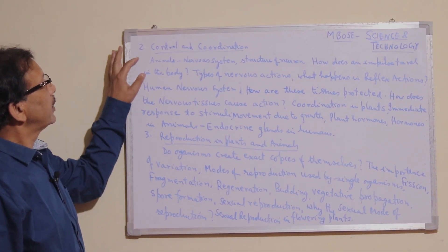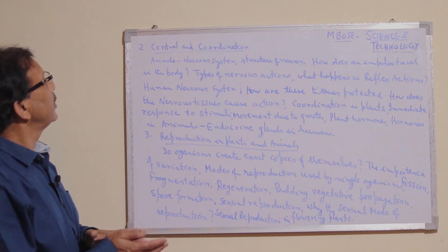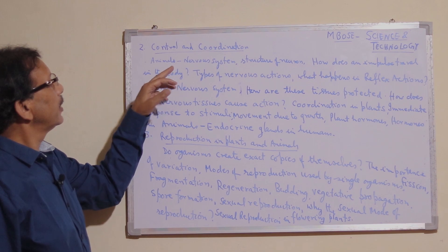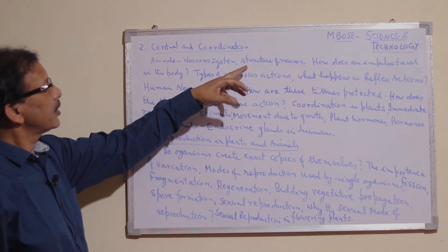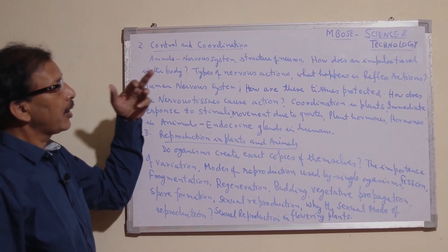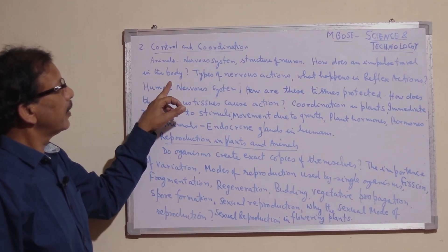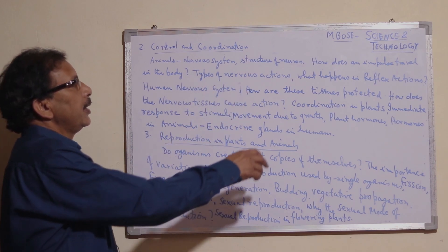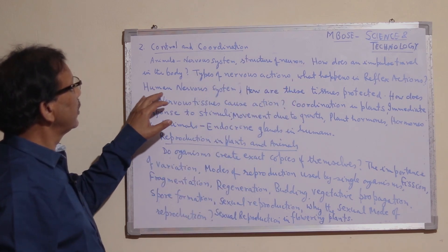The second chapter of Biology is control and coordination. We study animals' nervous system, structure of neuron, how an impulse travels in the body, types of nervous actions, what happens in reflex action, and human nervous system.